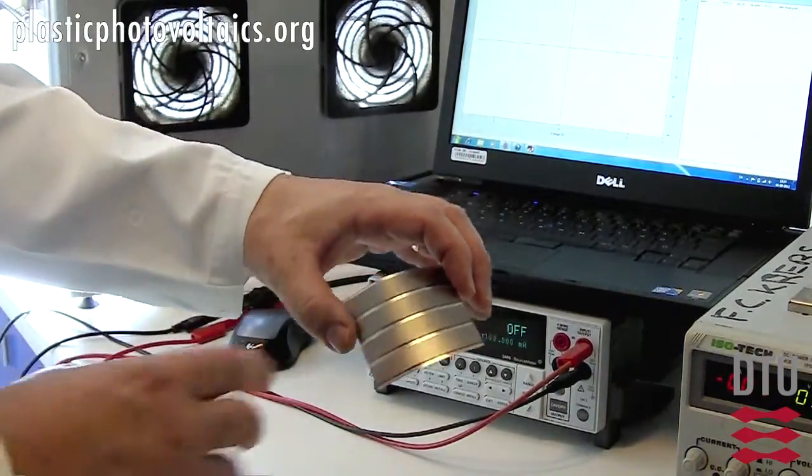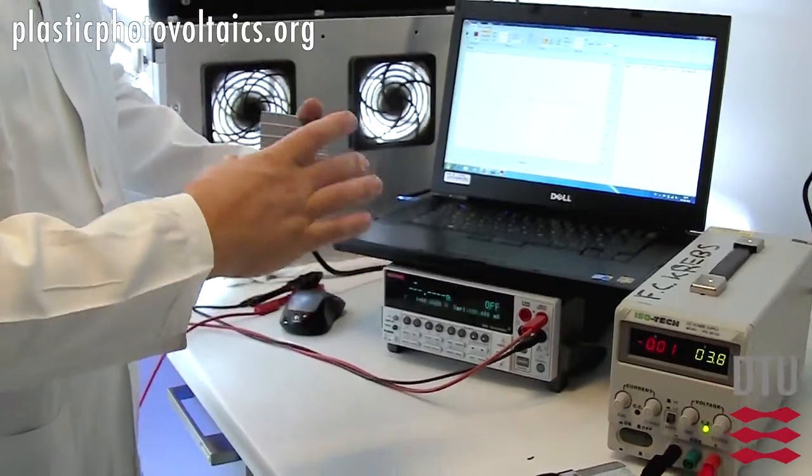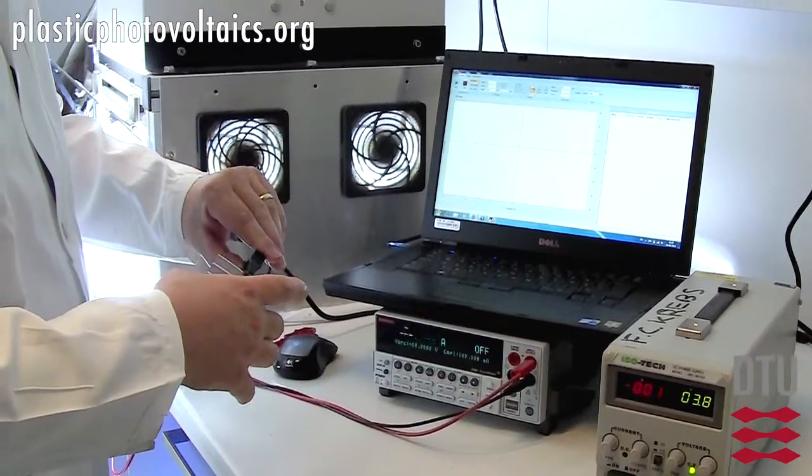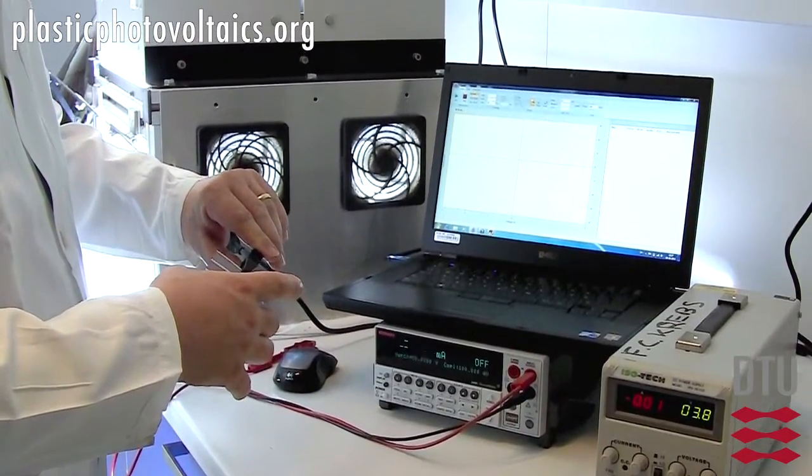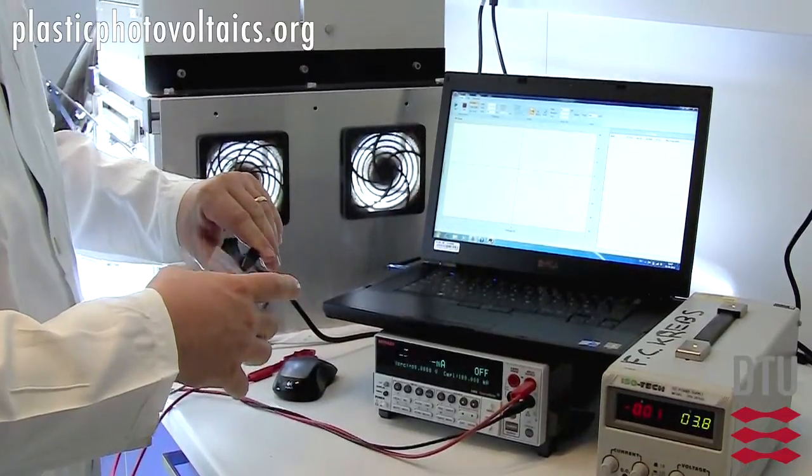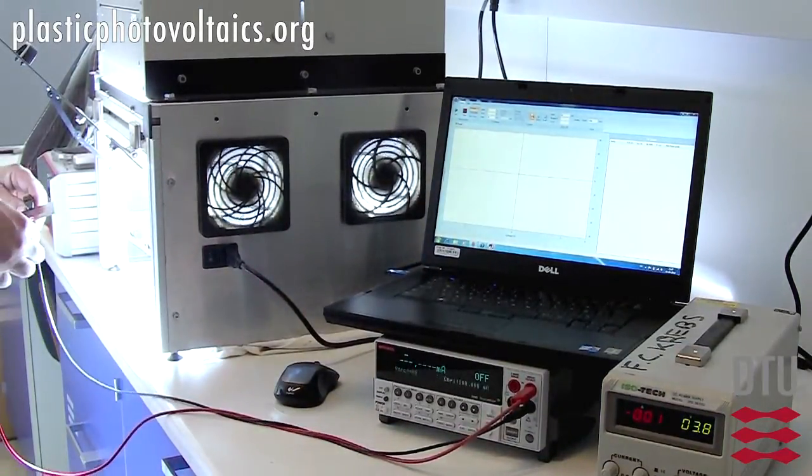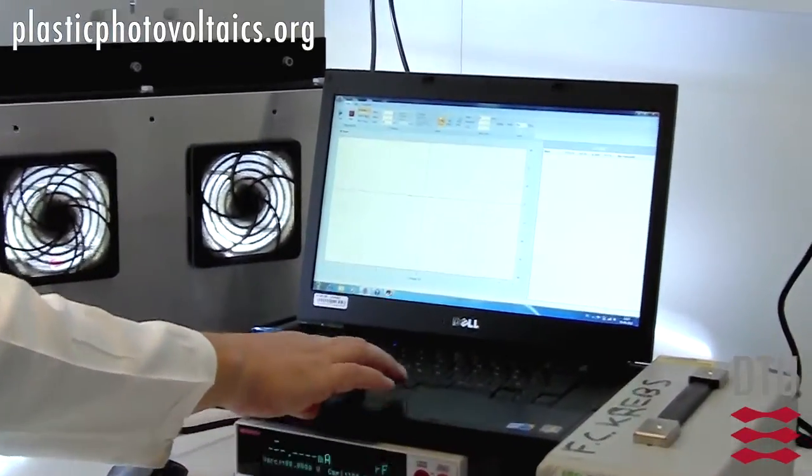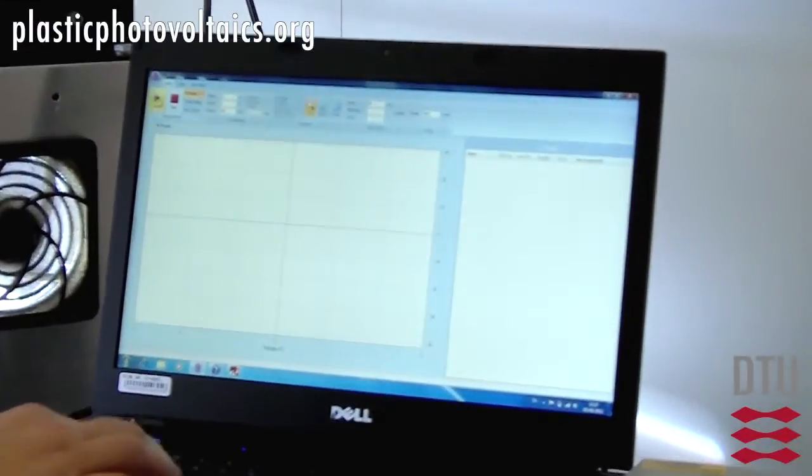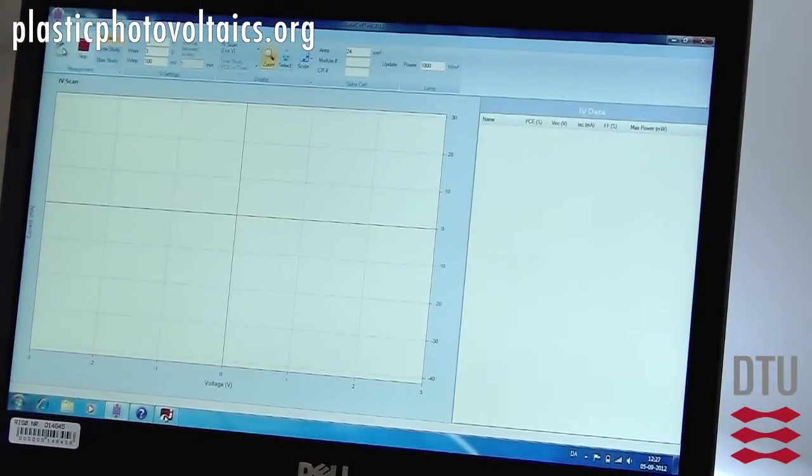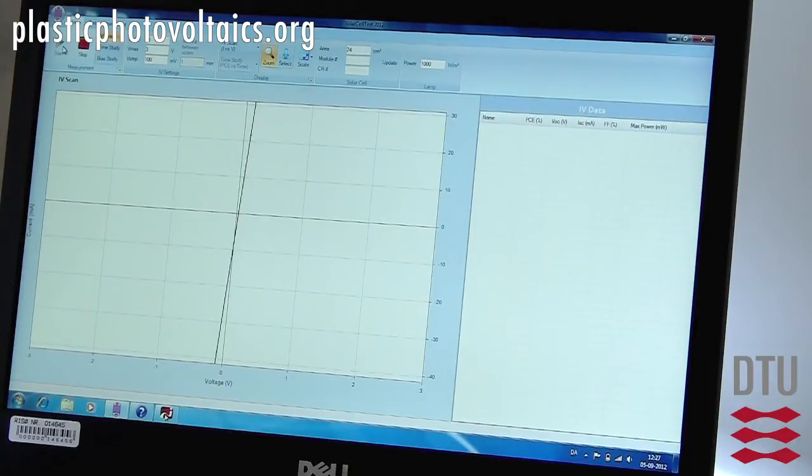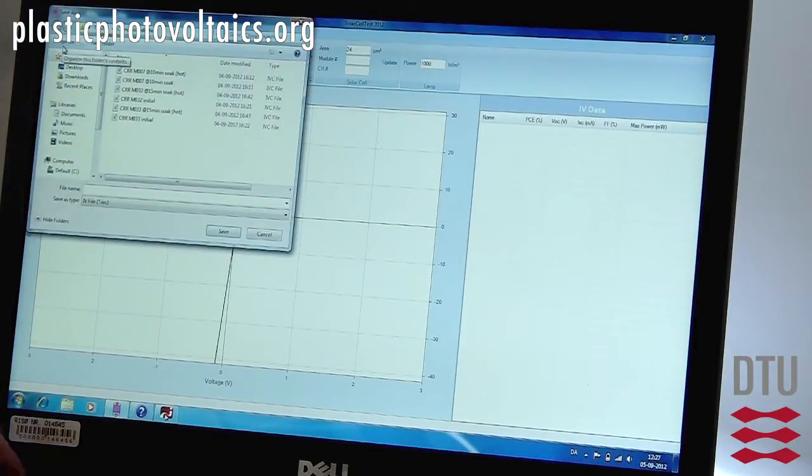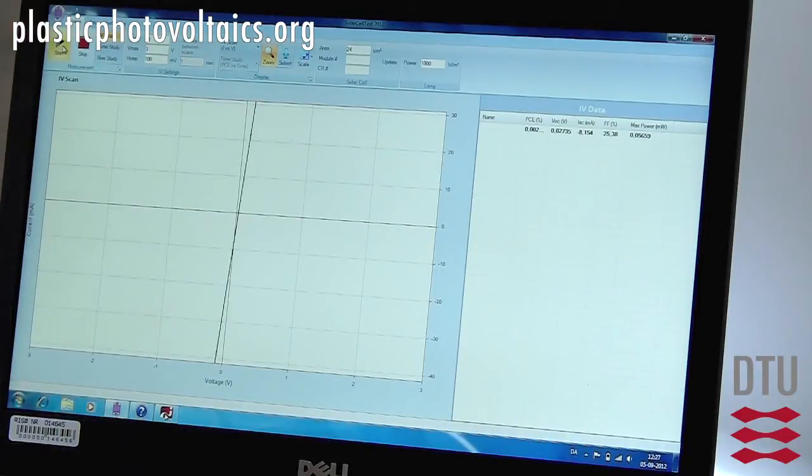Before switching, we're just going to do an IV curve on the unswitched module. As you can see from the IV curve, it's practically not a solar cell, more like an ohmic contact.